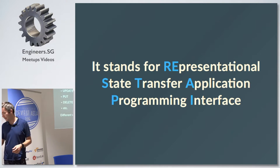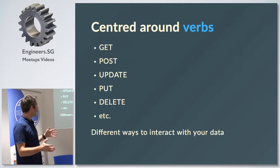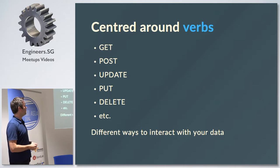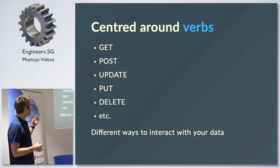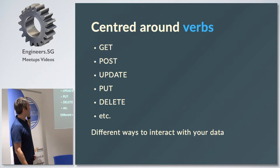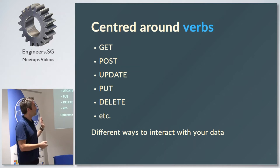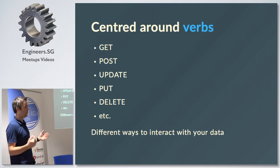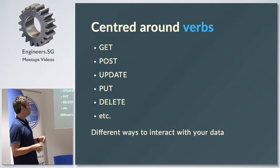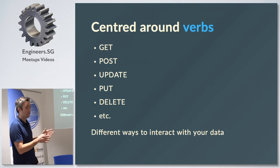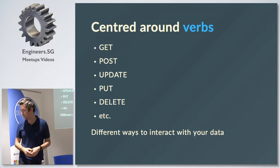REST APIs are centered around verbs. We have the ideas of GET, POST, UPDATE, PUT, and DELETE. These are the main ones and hopefully quite self-explanatory. GET is how you get data from your website, POST is how you post stuff to it. You can also be more granular — you can specifically just UPDATE or PUT, and obviously DELETE removes stuff from your data set.